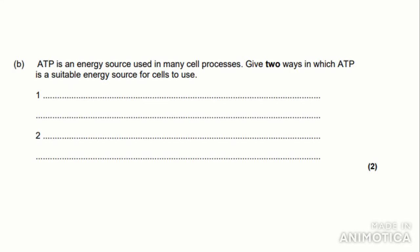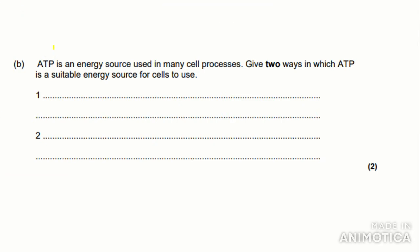That is all you need to know about ATP for the biological molecules section, so now we'll get on to some exam questions. The first question: 'ATP is an energy source used in many cell processes. Give two ways in which ATP is a suitable energy source for cells to use.' You need to suggest two properties of ATP that allow cells to carry out their functions. The key word here is 'cells' — you need to give examples of how ATP helps the cell as a whole.